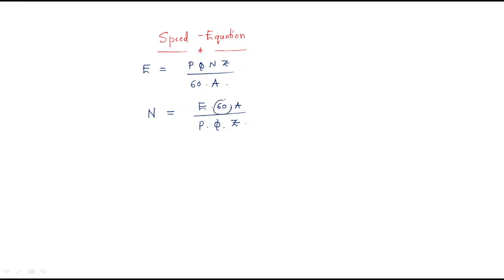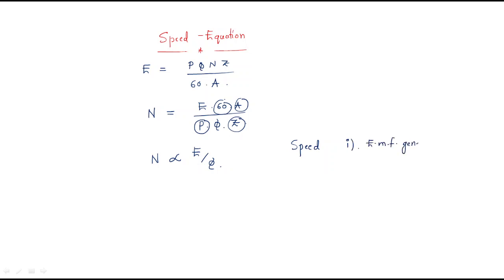Here 60 is a constant, A is constant, number of poles is constant, and number of conductors is also constant. Finally, the speed of any DC machine depends on two factors: the EMF generated and the flux. Speed is proportional to the EMF generated and the second factor is flux.